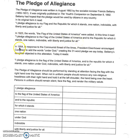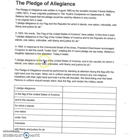In 1954, in response to the communist threat of the times, President Eisenhower encouraged Congress to add the words 'under God,' creating the 31-word pledge we say today. Bellamy's daughter objected to this alteration. Today it reads: 'I pledge allegiance to the flag of the United States of America, and to the republic for which it stands, one nation under God, indivisible, with liberty and justice for all.'